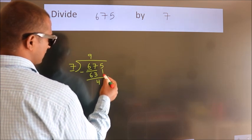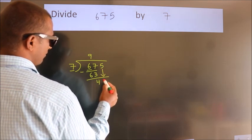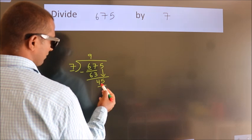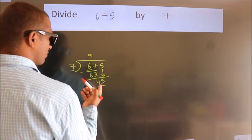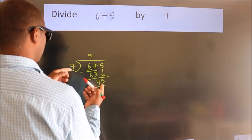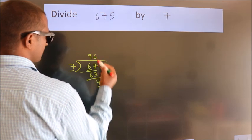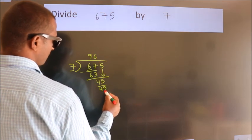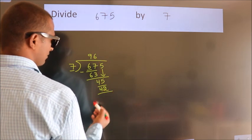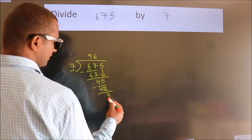After this, bring down the next number. So 5 down, giving us 45. A number close to 45 in the 7 table is 7 sixes, 42. Now we subtract. We get 3.